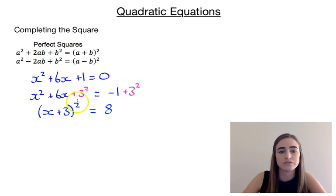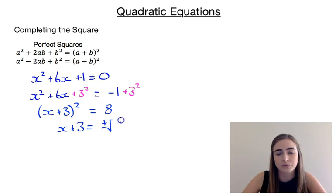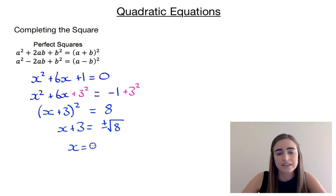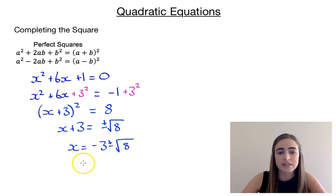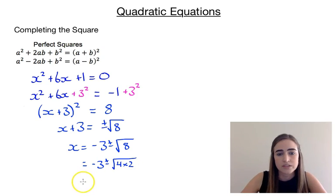Now we can solve. We get rid of the squared by taking the square root of both sides, giving x plus 3 equals plus or minus the square root of 8. That plus or minus is really important. Then we subtract 3, giving x equals minus 3 plus or minus the square root of 8. We can simplify the square root of 8 as the square root of 4 times 2, which gives us minus 3 plus or minus 2 root 2.